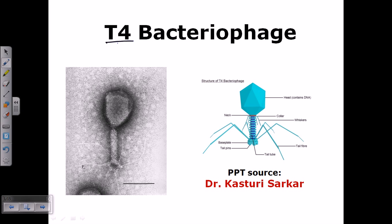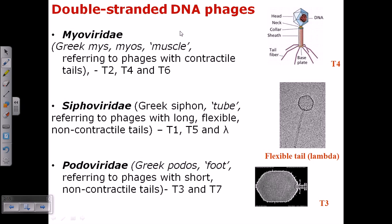T4 bacteriophage is an important model bacteriophage to be studied. Looking at the structure of T4 bacteriophage, here you can see the electron microscopic view and a schematic presentation. It is made up of three major regions: the head region, the tail region, and the collar or neck where the head is attached to the tail.